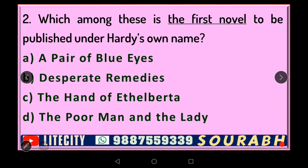Our next question is: which among these is the first novel to be published under Hardy's own name? Hardy published his initial two works anonymously. It is only with this particular novel that he put his name on the front page. Was it A) 'A Pair of Blue Eyes,' B) 'Desperate Remedies,' C) 'The Hand of Ethelberta,' or D) 'The Poor Man and the Lady'?